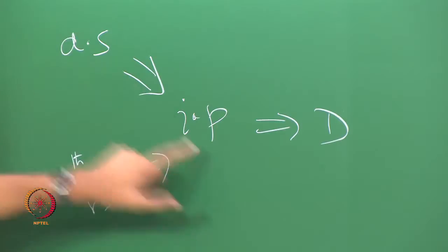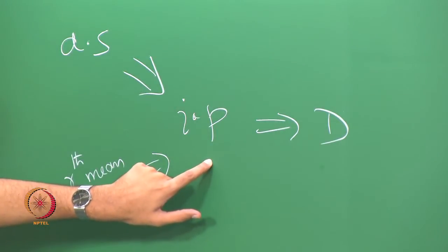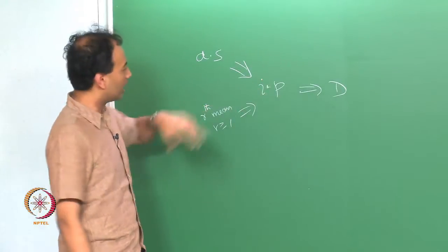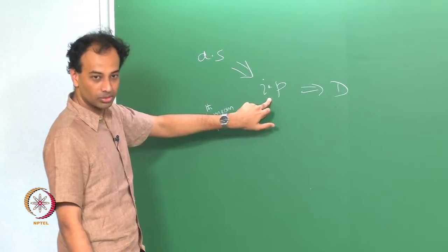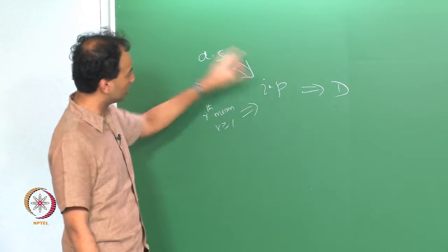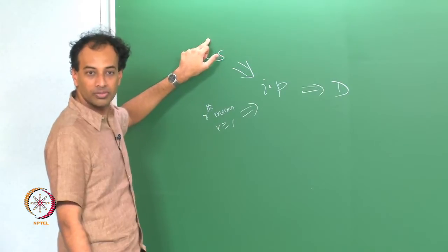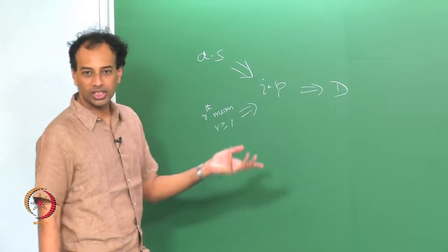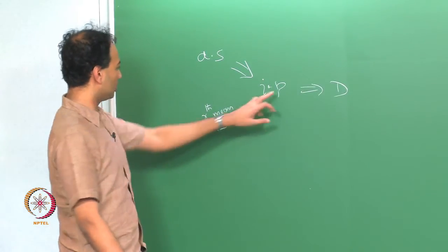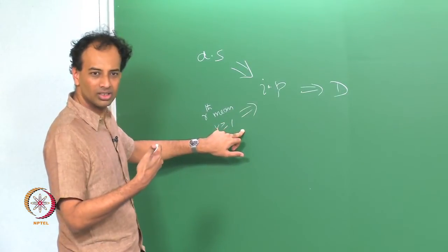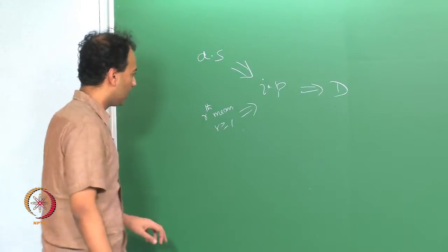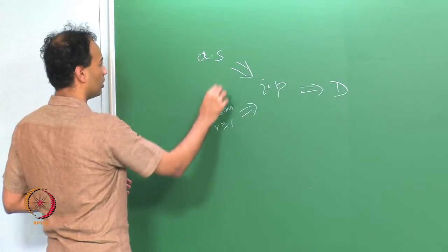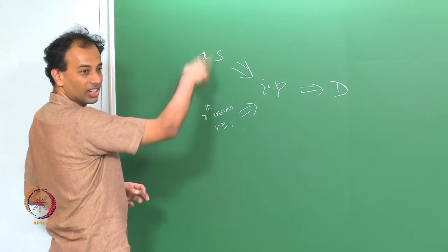We gave a counter-example, proved a major theorem about the equivalence of almost sure convergence and excursions beyond epsilon, and using that we proved almost sure convergence implies convergence in probability. We also gave a counter-example that the converse is not true. What remains is to give counter-examples showing that neither almost sure nor mean square convergence implies the other.